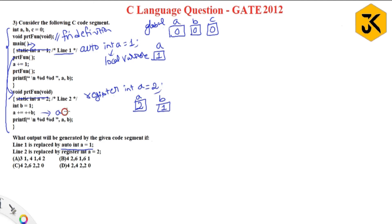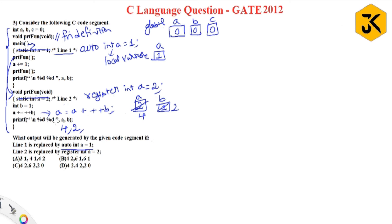Then a = a++ + b: a value is 2, and ++b makes b become 2, so 2 + 2 = 4, which is stored back in a. Then printf prints a and b. Since there is a local variable a with value 4, it prints 4. For b, the local b value is 2, so it prints 2. The first printf output is 4, 2.